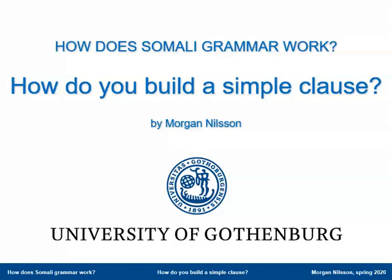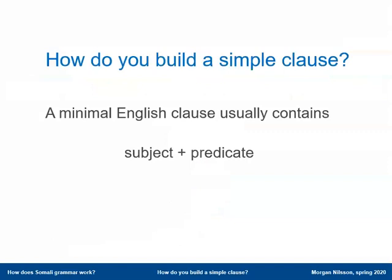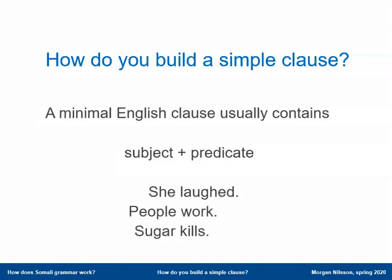In this video I want to say a few things about how a simple minimal Somali clause is constructed, how it's built. A minimal English clause usually contains at least two words, a subject and a predicate. The subject can be a pronoun or a noun, and the predicate is normally a verb. We have three different examples of that here.